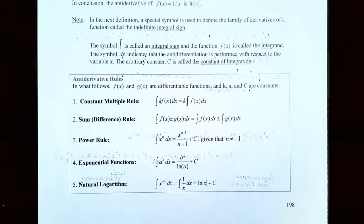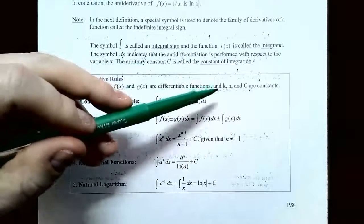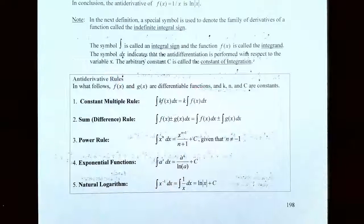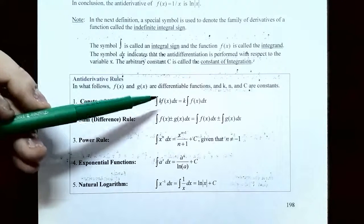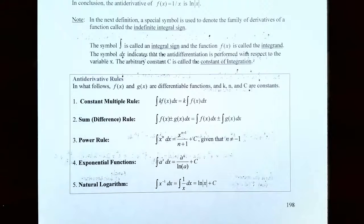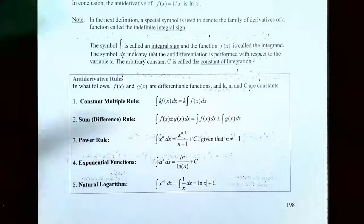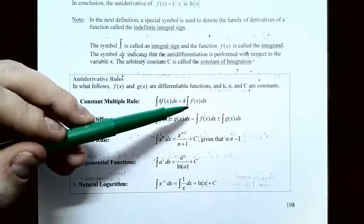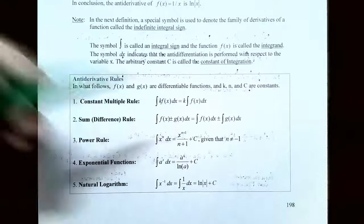Let's talk about the antiderivative rules. f(x) and g(x) are differentiable functions, k, n, and C are all real numbers or constants. Rule number one is the constant multiple rule: if you have a function times a constant in the integrand and x is the variable of integration, k does not depend on x. So you can take k outside the integral sign and just multiply your answer by k.